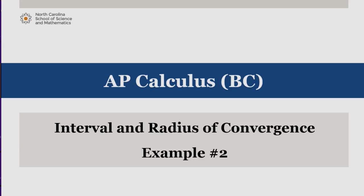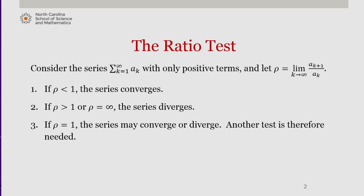In this video, we'll work through identifying the interval and radius of convergence of another power series. Let's first briefly recall the ratio test. We consider a series with only positive terms and define rho as the limit as k approaches infinity of the k plus first term divided by the kth term in that series.